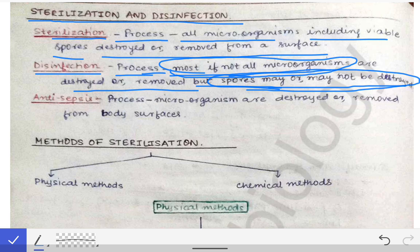The second difference is that in the sterilization process all spores must also be removed, but in disinfection, spores may or may not be destroyed — the spores may remain on the surface if not destroyed by the disinfectant. These are the two most important differences between sterilization and disinfection.